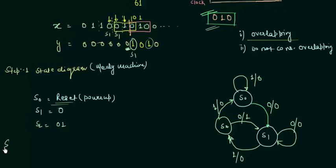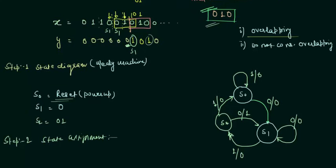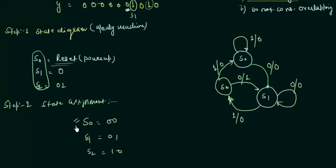Step 2 is state assignment — assigning these three states their binary equivalents. S0 is 0,0; S1 is 0,1; and S2 is 1,0. Using this state assignment we develop the circuit, which I won't cover in this presentation — a separate presentation will be devoted to designing the circuit using the state assignment. State reduction can also be applied if the number of states is not minimal; that will be covered in the separate presentation as well.